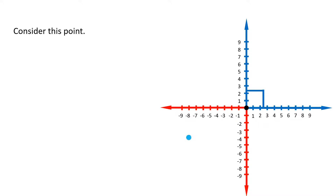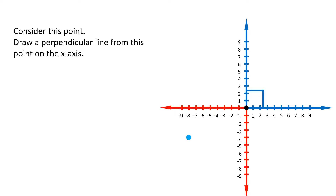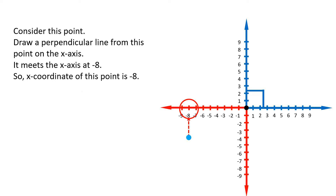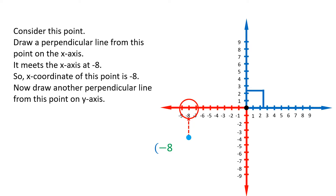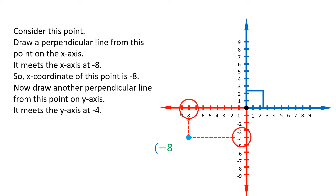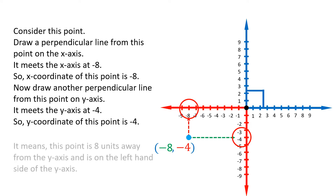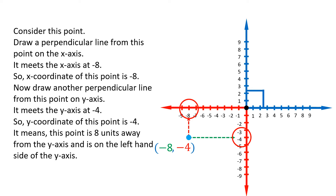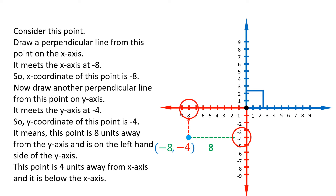Consider another point: draw a perpendicular to the x-axis — it meets at negative 8, so the x-coordinate is negative 8. Draw a perpendicular to the y-axis — it meets at negative 4, so the y-coordinate is negative 4. This means the point is 8 units to the left of the y-axis and 4 units below the x-axis.